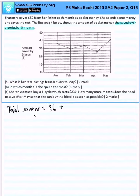Then we have $30, $34, $26, $42, and that gives us $168. Part (b): In which month did she spend the most?